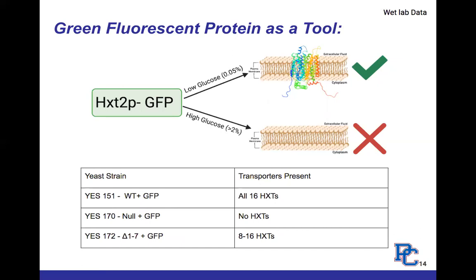You might be thinking — I thought you were doing HXT4, not HXT2. We didn't have an HXT4-tagged mutant in the lab, but like HXT4, HXT2 is also a high affinity transporter expressed at low levels of glucose, as shown in the top image — so it was our next best option. The table below shows the yeast mutants used for this experiment: the wild type plus GFP, the null plus GFP, and the one-through-seven delete GFP. These strains were chosen because each has a different amount of glucose transporters present in the cell.